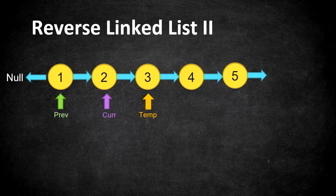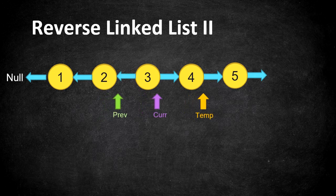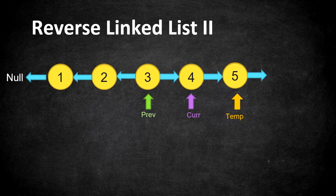Once we create the connection, we move all three pointers to the next nodes so we can create a new connection. Now current is at 2 — we establish a connection from current.next to previous, removing the forward link from 1 to 2. We keep moving all three pointers and repeating this process until the complete list is reversed. This is the classic approach of reversing a linked list.